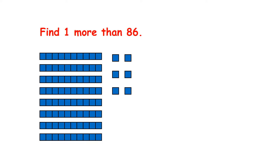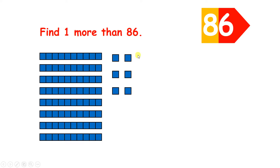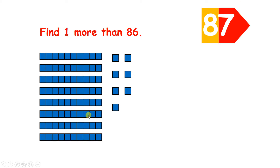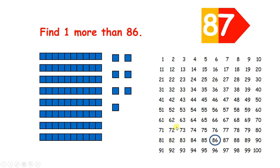Find one more than 86. So we have 8 tens and 6 units. Now if we add one more unit, we have 8 tens and 7 units. So here on the 100 square, if we move one place to the right, then we have one more — so that's 87.